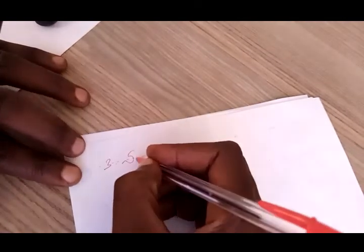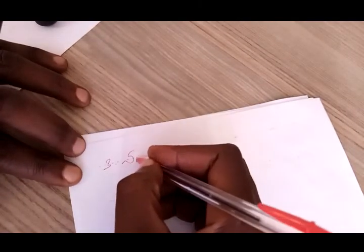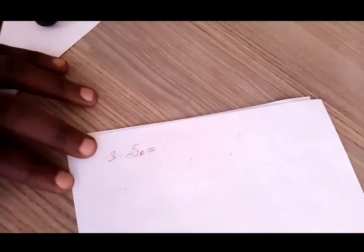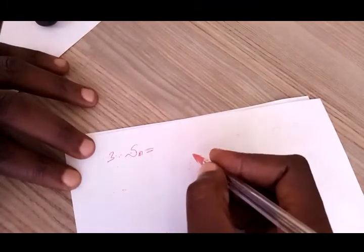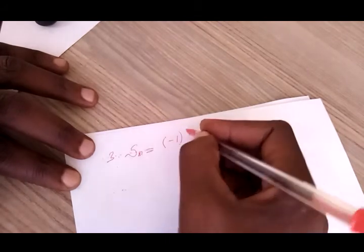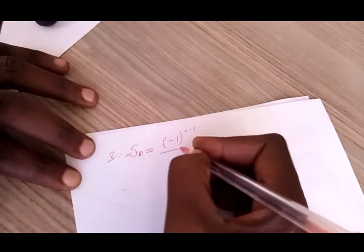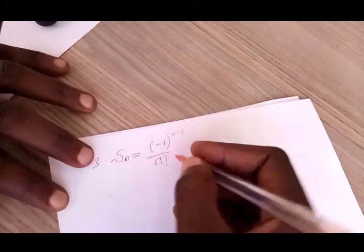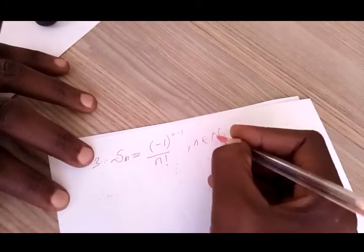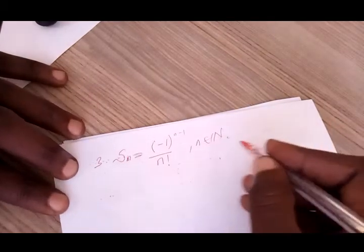Let's look at some other examples to make this point very clear — I will look at four of them, each different from the other. Consider the sequence Sn given by (-1)^(n-1) divided by n factorial, where n is from the set of natural numbers. What are some of the possible results?